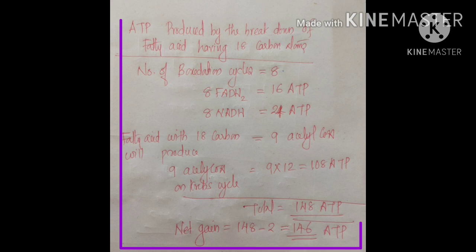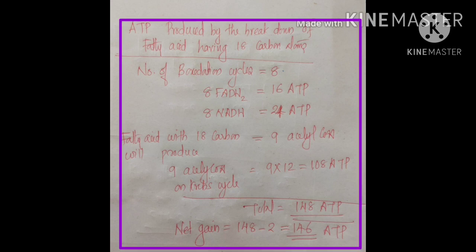Now let's calculate ATP from an 18-carbon fatty acid, which is stearic acid. It performs 8 rounds of beta oxidation. Each round produces 1 FADH2 and 1 NADH, so 8 rounds produce 8 FADH2 and 8 NADH. Since 1 FADH2 = 2 ATP and 1 NADH = 3 ATP: 8 FADH2 = 16 ATP and 8 NADH = 24 ATP.